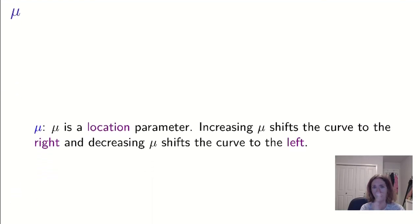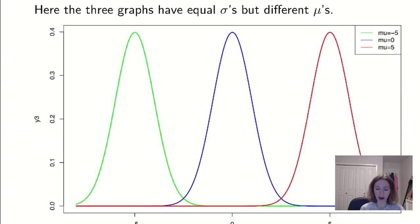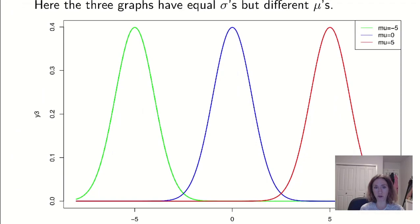We have two things that are describing it as a parameter. Mu, we know that the mean is our measure of center, so we call it a location parameter. As we move mu it's going to shift the curve to the right or to the left depending on whether we increase mu or whether we decrease mu. What I have here is graphs of three normal distributions. They all have the same sigma so we'll notice they have the same width each of them. They have the identical shape. The only difference is where they're centered.